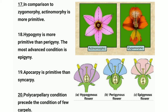Point nineteen: apocarpy is more primitive than syncarpy. In apocarpy, flowers have more than one carpel but they are free — for example, lotus and rose flowers. In syncarpy, the carpels are fused — for example, tomato and mango. Point twenty: the polycarpellary condition precedes the condition of few carpels. In polycarpellary, two or more carpels are present which later become fused.